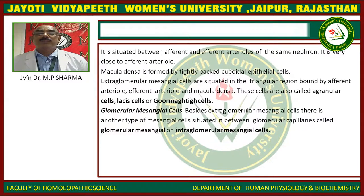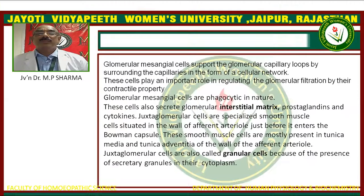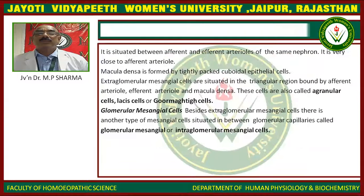Extraglomerular mesangial cells are situated in the triangular region bounded by the afferent arteriole, efferent arteriole, and macula densa.